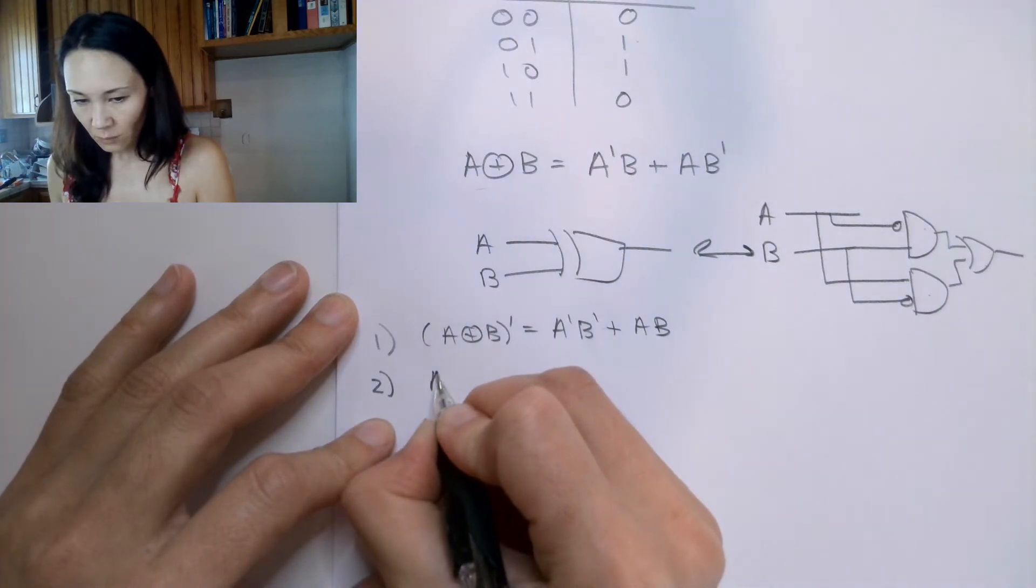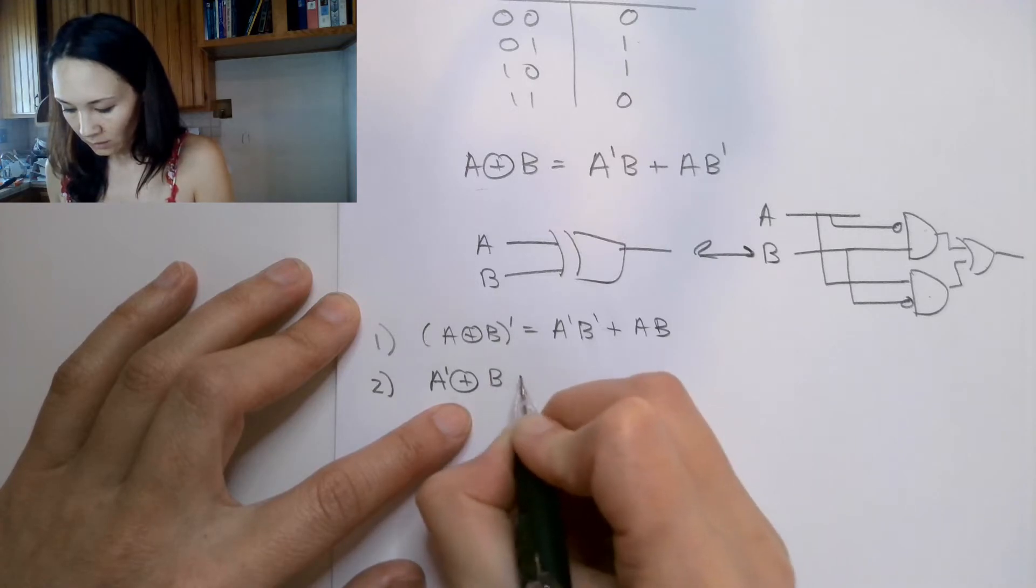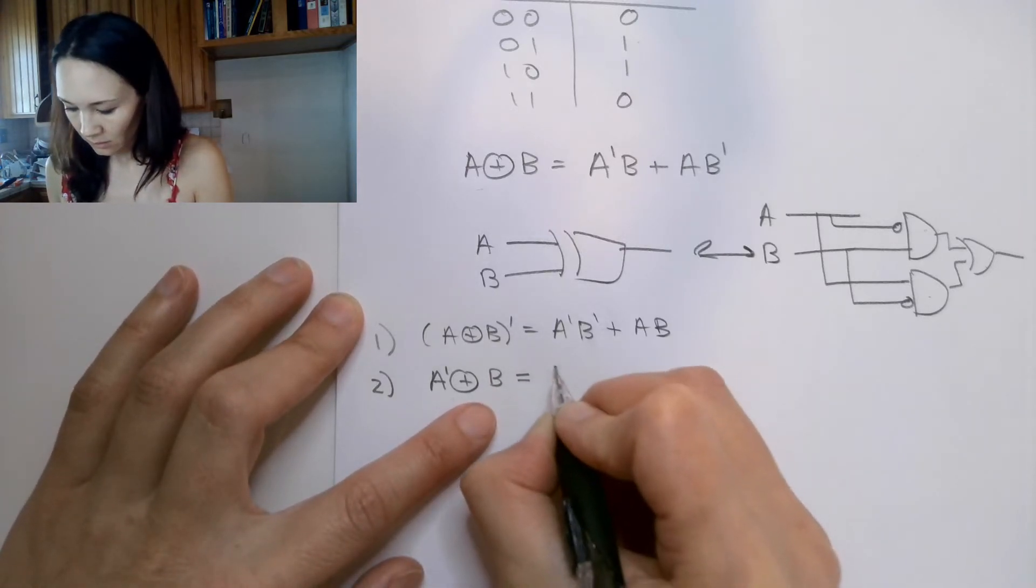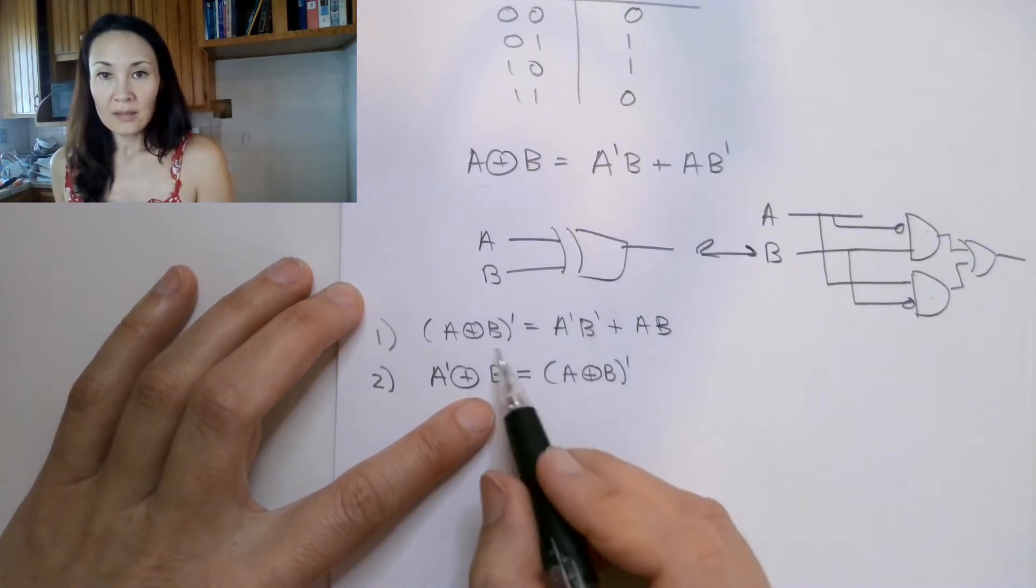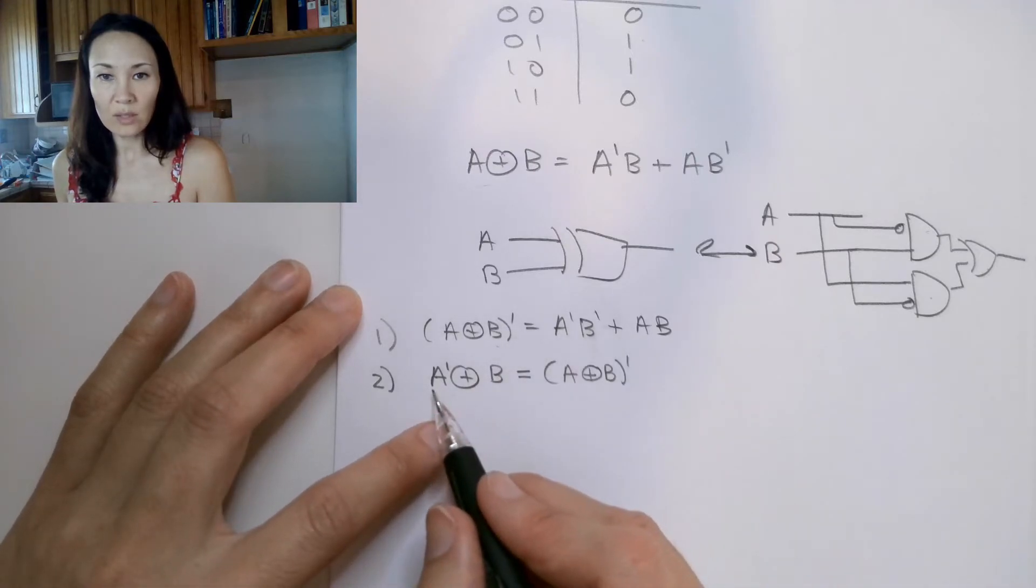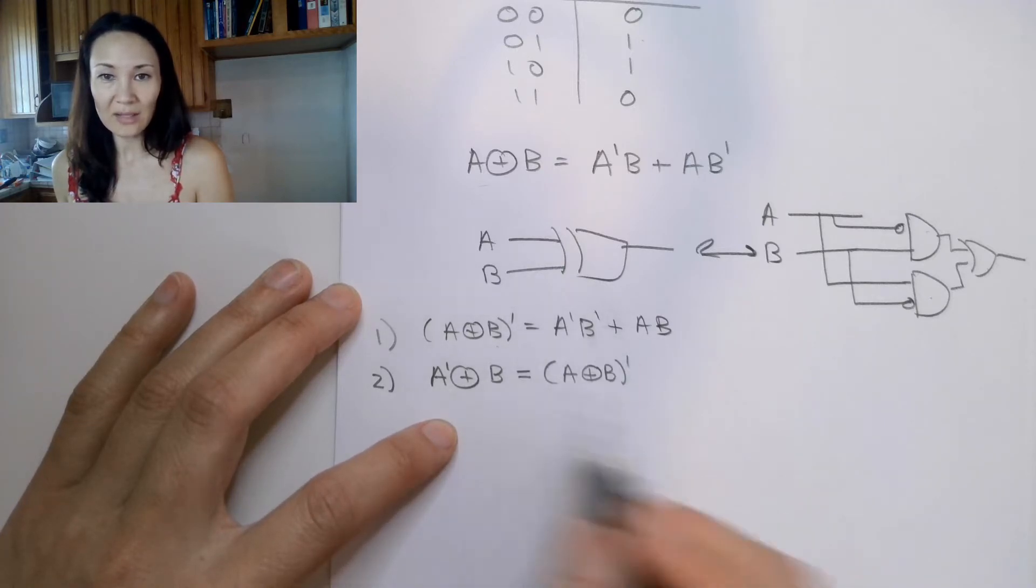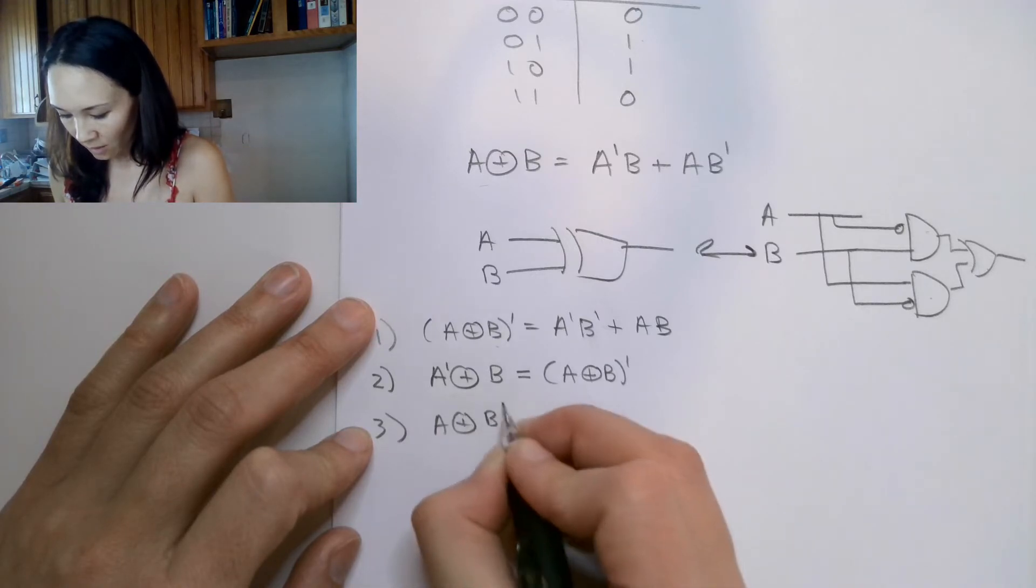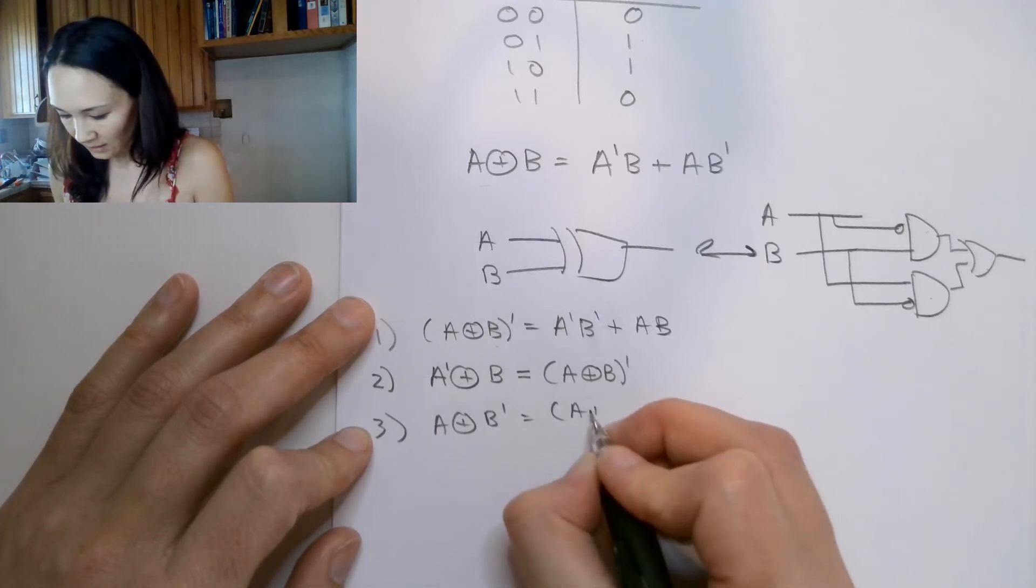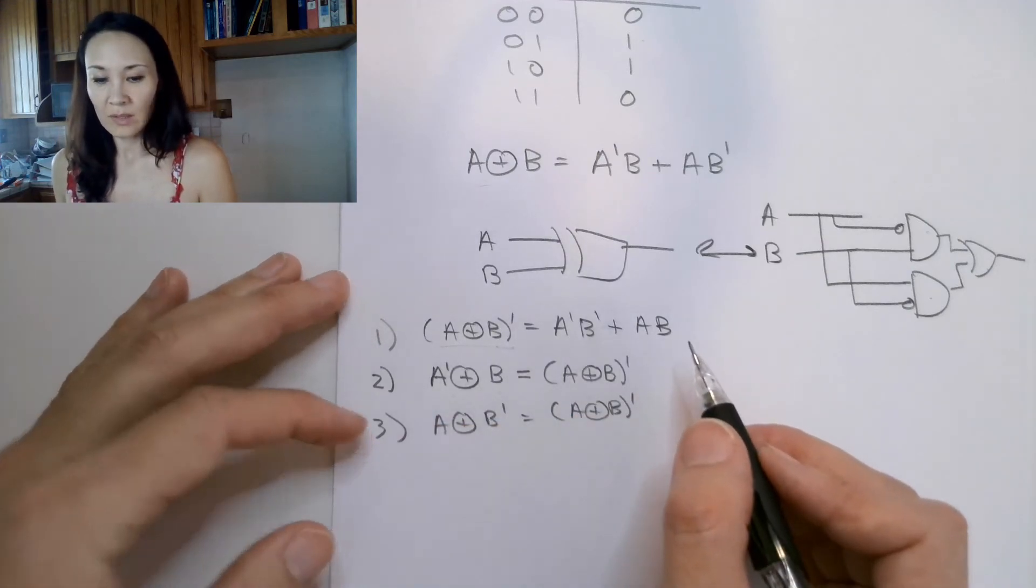The next one we have is that if we negate one of the arguments of the XOR, that is equal to A XOR B naught. Okay? So we know that this is equal to that. If we know that this is equal to this and this is equal to that, that means that's also equal to this. So these are all equal to each other. We also have that if we negate the other argument, that this is also equal to the same thing. So this is equivalent to this, is equivalent to this, is equivalent to this.